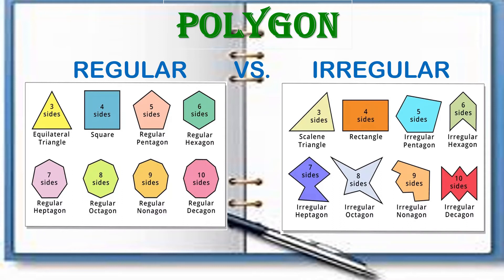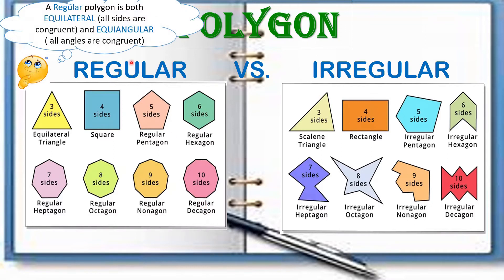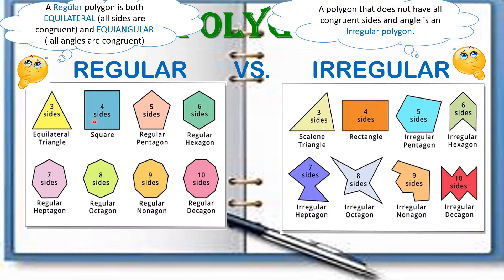A polygon can be classified as regular or irregular. A regular polygon is both equilateral, where all sides are congruent, and equiangular, meaning all angles are congruent. Irregular polygons do not have all congruent sides and angles.